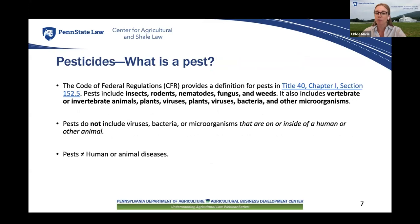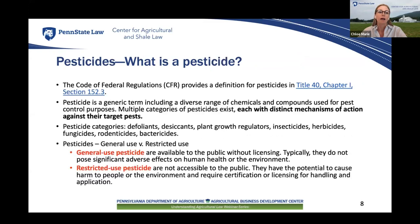Let's define what we mean by pests and pesticides. A pest is any organism that is detrimental to humans, their property, or the environment, including insects, rodents, fungi, weeds, viruses, bacteria, and other microorganisms. A pesticide is a generic term that includes a wide variety of chemicals and compounds used to kill pests. They are generally classified by the type of pests they control — for example, insecticides, herbicides, fungicides, or rodenticides — or by their chemical composition.